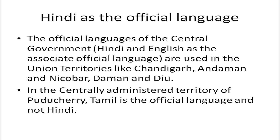Apart from these states, there are central government territories — often called union territories — which also accept Hindi as the first and foremost language for official purposes. For example, union territories like Chandigarh, Andaman and Nicobar, and Daman and Diu, which are centrally administered, use Hindi as the official language. Along with Hindi, English is the associate official language for all central government offices, so in all these union territories Hindi remains the main official language.